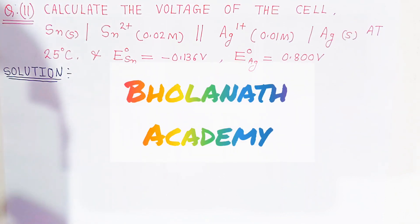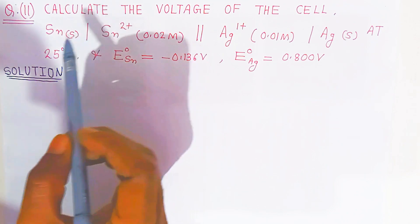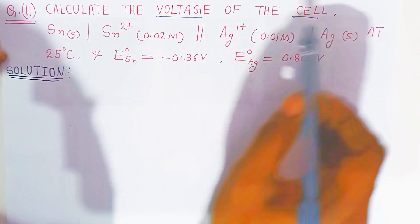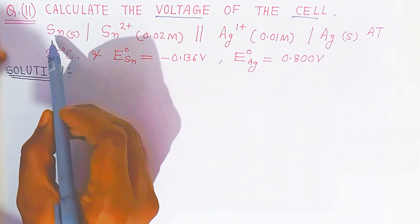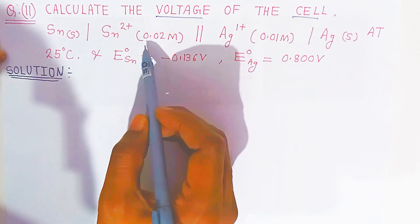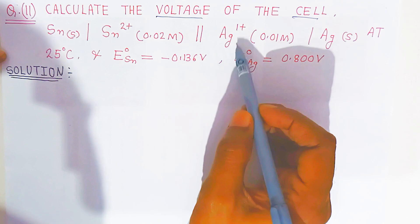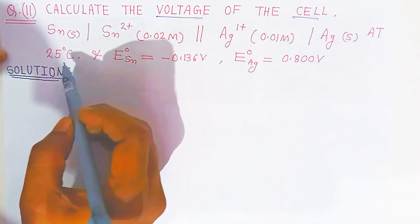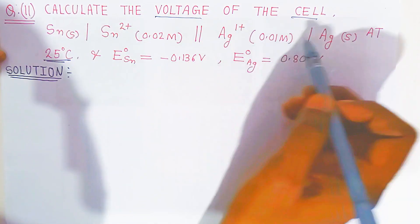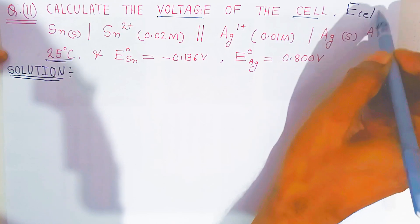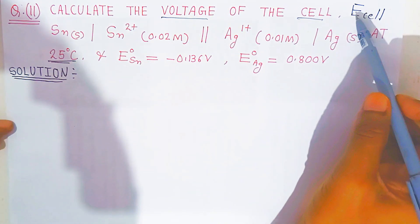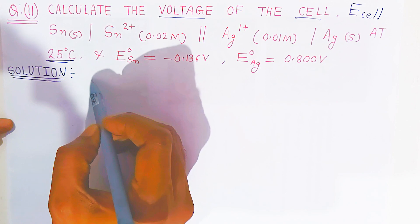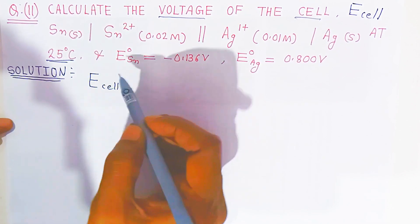Hello students, once again welcome to Bholanath Academy. In this video we are going to see question 11, where we will calculate the voltage of the cell. The cell formula is given: stannous solid in contact with stannous 2+ concentration 0.02 molar, in contact with silver 1+ concentration 0.01 molar, in contact with silver solid at 25°C. We have to calculate the voltage, that is, the cell potential E of the cell.